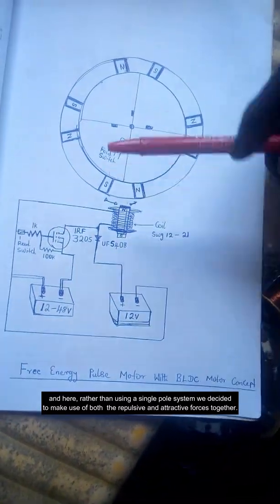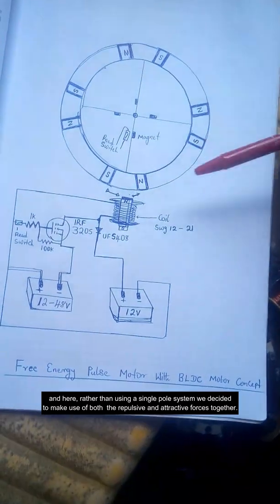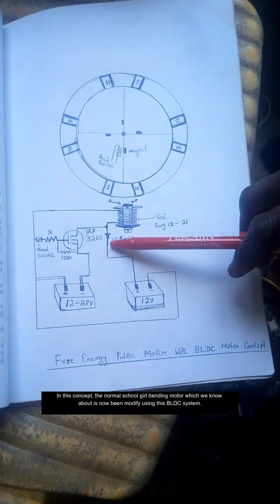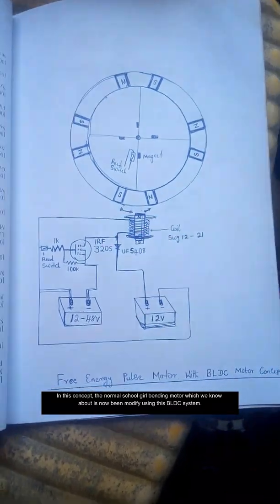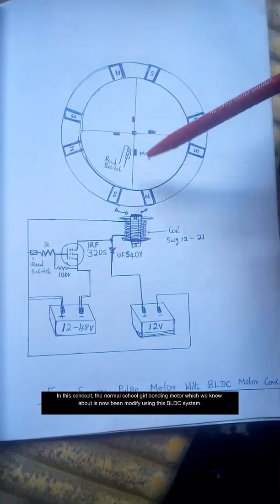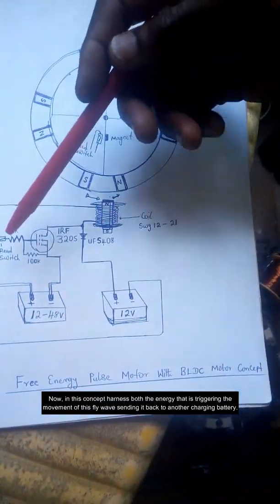This concept you normally see in a normal DC gear motor, which we know about, is now being modified using this BLC system. In this concept, you harness the energy that is triggering the movement of this flywheel.